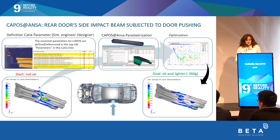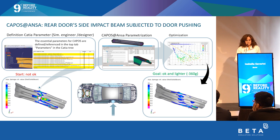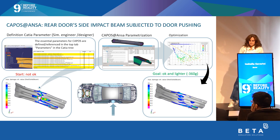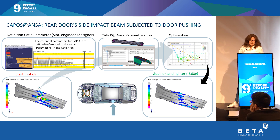An important step is the ANSA parametrization, where the CAT part and the CATIA parameters are read into ANSA. The optimization workflow is set up in ANSA itself. Then we ran a design of experiment, and on the basis of that we performed an optimization. In the end, we arrived at an optimized structure that is lighter and no longer tears as the initial geometry did.